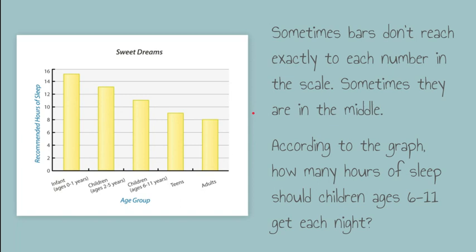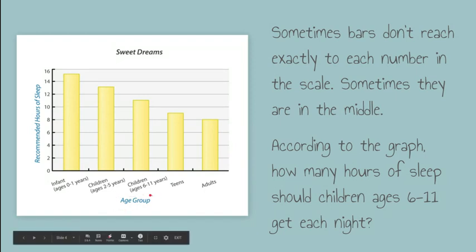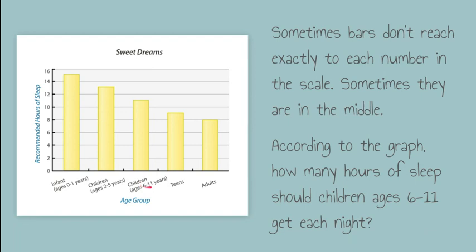According to the graph, how many hours of sleep should children ages 6 to 11 get each night? First I have to find where it says ages — age group, children ages 6 to 11 years. So this is the bar I'm going to look at, and right here I can see if I follow that over, it ends up right in the middle.